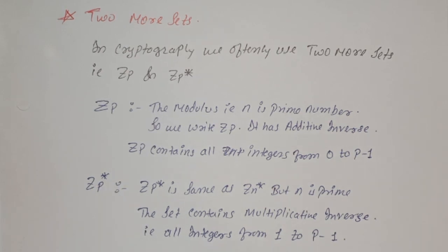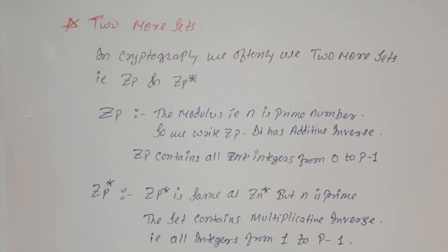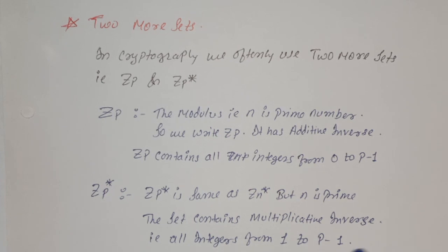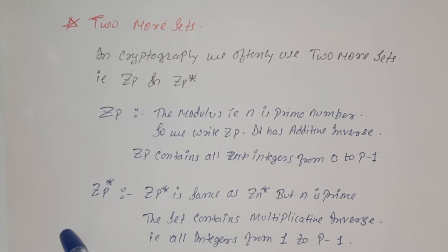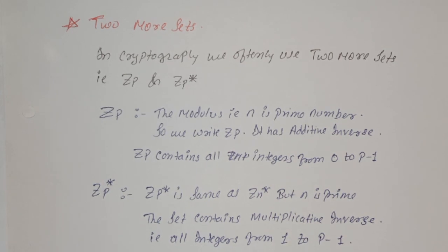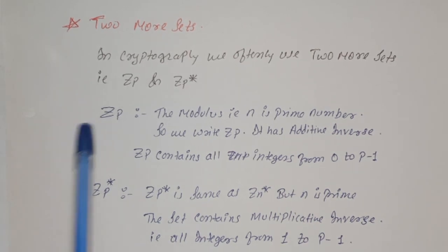And Zp star, that is same as Zn star, but n is prime number. This set contains all the multiplicative inverses. So in the prime number set, that is Zp star set, it consists of all the integers from 1 to p minus 1, because 0 does not have inverse in the set. So these 2 terms are very easy to keep in mind, so while solving the problems we can use them.